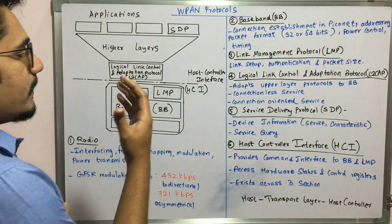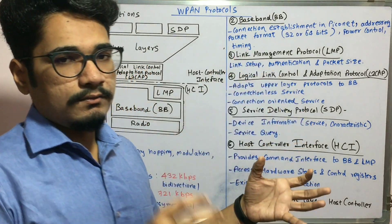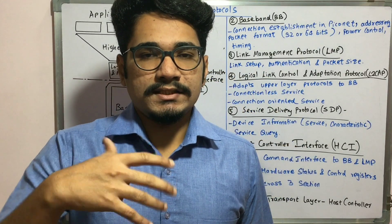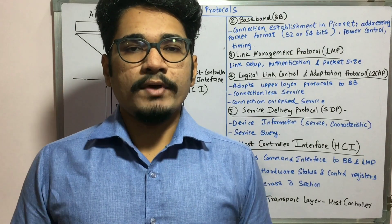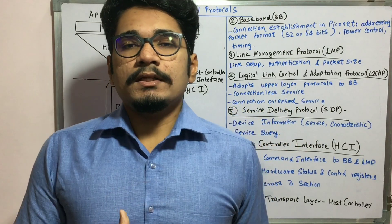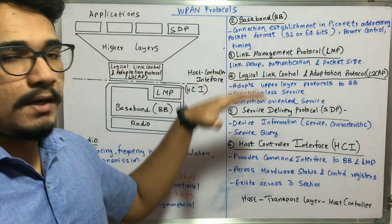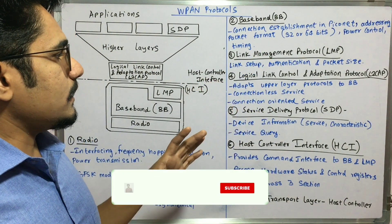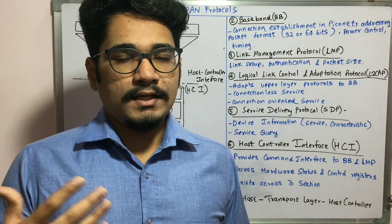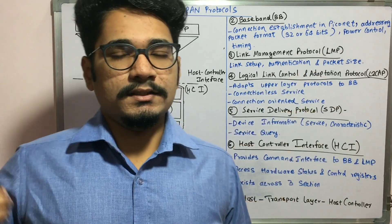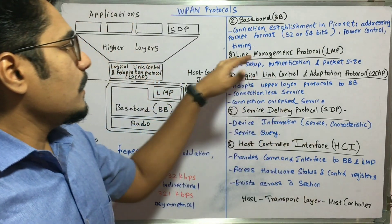Next we have the Link Management Protocol (LMP). From the name itself, it manages the link established between various Bluetooth devices — for example, a Bluetooth speaker, headset, or fitness tracker. When these devices come into picture, the configuration between them is established with the help of LMP, through a manager called the link manager. It also handles authentication of various devices, their MAC address, IP address, packet size, and the distance to which data is transmitted.